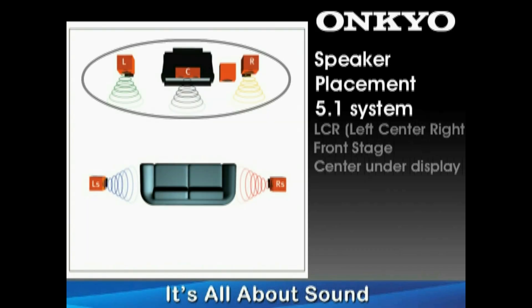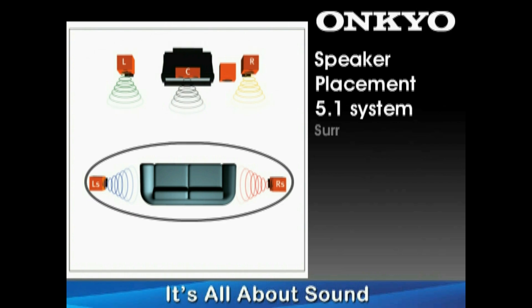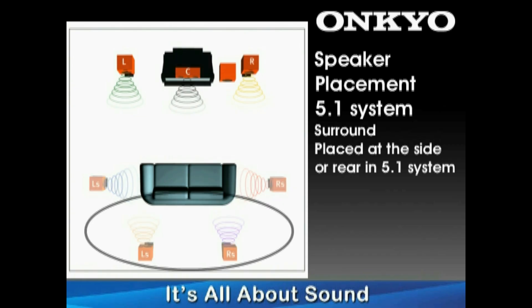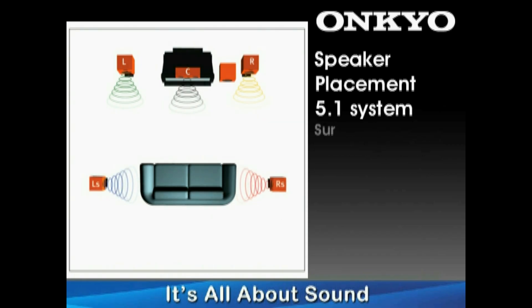In a 5.1 system, the LCR stage still goes along the front wall with the center channel above or below the display device. The surround channels are used either to the side or to the rear of the main seating position, while the surround back channels are not used.